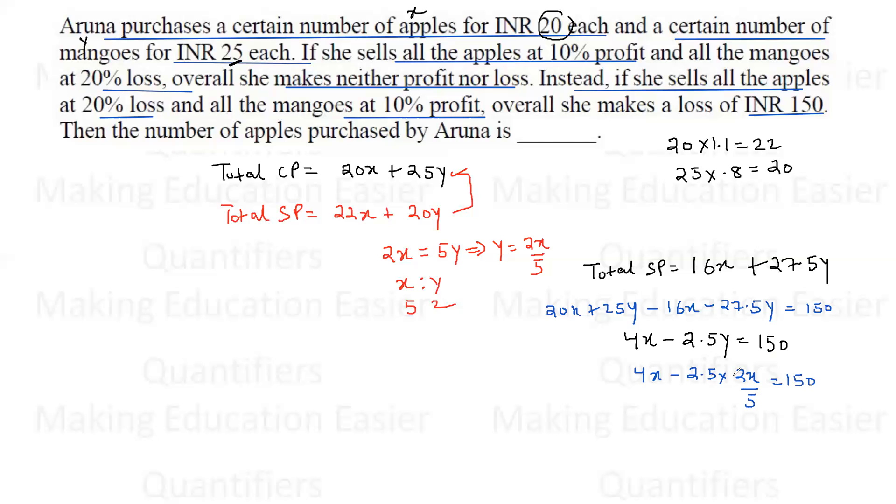2.5 times 2 is 5, which cancels. We get 4X - X, that is 3X. 3X equals 150. X comes out to be 50.